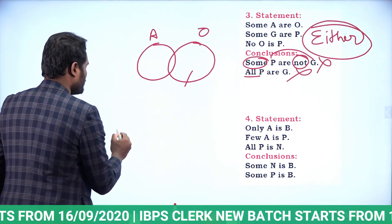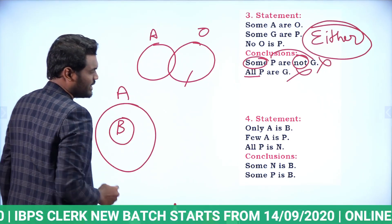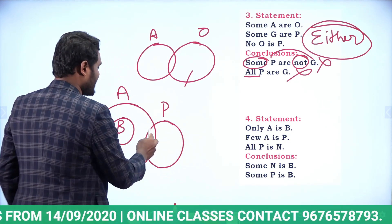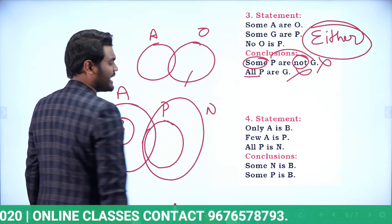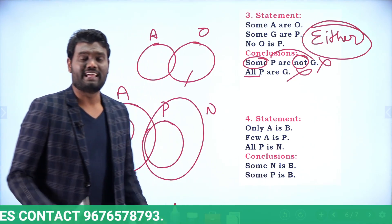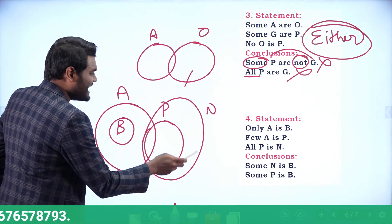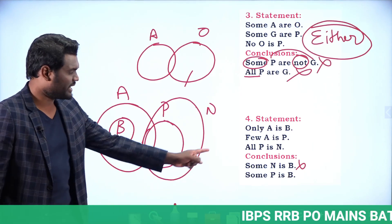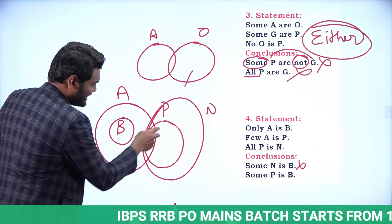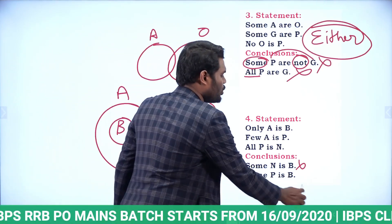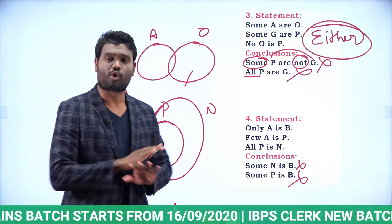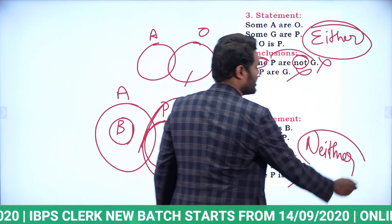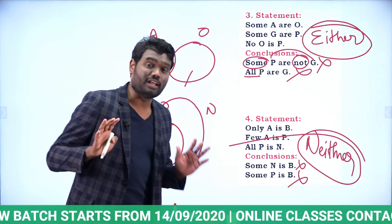Next syllogism: 'Only A is B' means all B are A. 'Few A is P' means some A are P. 'All P are N.' For 'some N is B' — looking at N and B, there is no intersection, so wrong. For 'some P is B' — P and B also have no intersection, so wrong. Both conclusions are wrong and it is not a complementary pair, so the answer is neither.